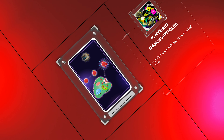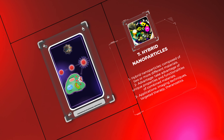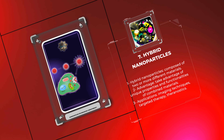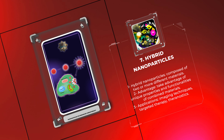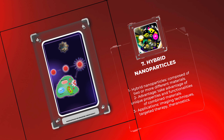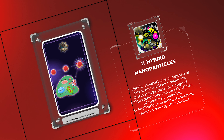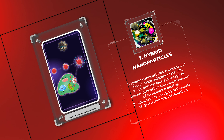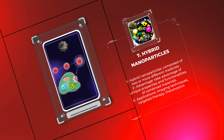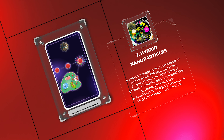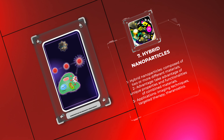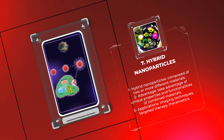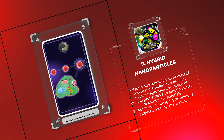Hybrid nanoparticles, as the name suggests, are nanoparticles composed of two or more different materials. By combining these materials, we can take advantage of their unique properties and functionalities. One example of a hybrid nanoparticle is when a metallic nanoparticle is coated with a polymeric shell. This combination increases the capacity of the nanoparticle to carry drugs and allows for controlled release of the drugs. The versatility of hybrid nanoparticles makes them valuable in various medical applications, such as imaging techniques, targeted therapy, and theranostics.